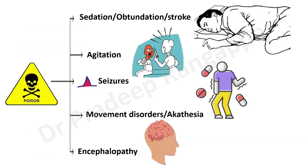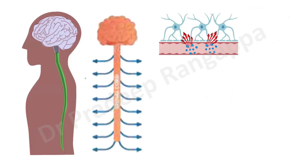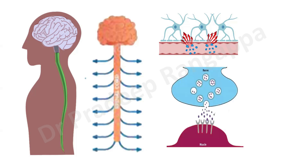Any poison can act on either the central nervous system or the peripheral nervous system. Certain drugs have variable penetration across the blood-brain barrier, and manifestations can be quite multifold and variable. There are also drugs which act at the neuromuscular junction — organophosphate poisoning acts on acetylcholinesterase, leading to accumulation of acetylcholine at the neuromuscular junction and resulting in weakness.